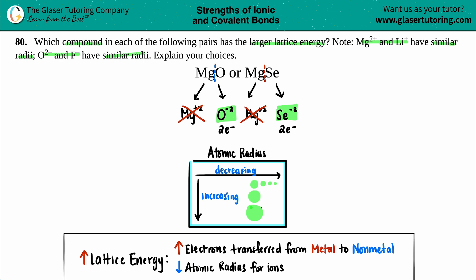On this trend, oxygen and selenium are in the same group, so we're only focusing on going down. As we go down, we're increasing. If oxygen is first, selenium would be larger than oxygen because as you go down, you increase in radius.